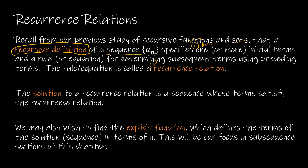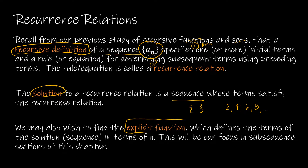The solution to a recurrence relation is the sequence whose terms satisfy the recurrence relation. The solution is just the actual sequence — you might see it written in sequence notation, or written as 2, 4, 6, 8, and so on. You might also want to find an explicit function. An explicit function is helpful because it gives us an actual function where I can plug in n and find the exact value of the sequence at that number. Whereas with the recursive relation, I have to find every value before it in order to find that value.